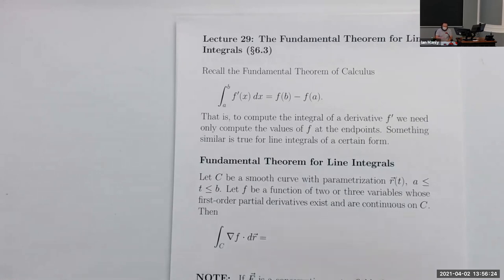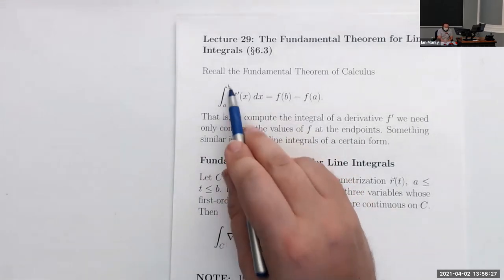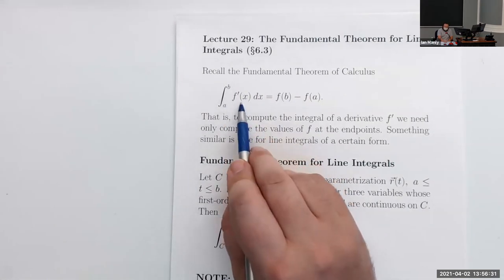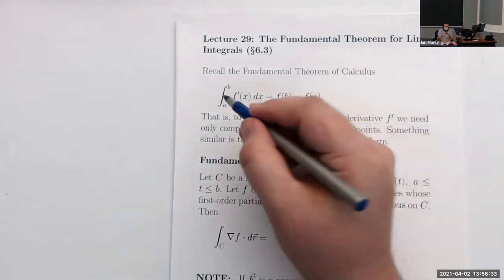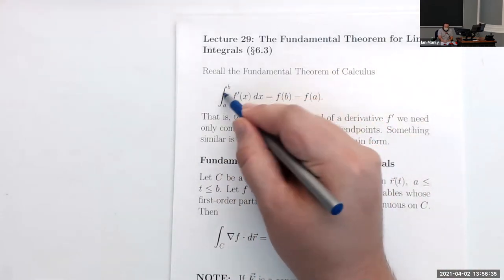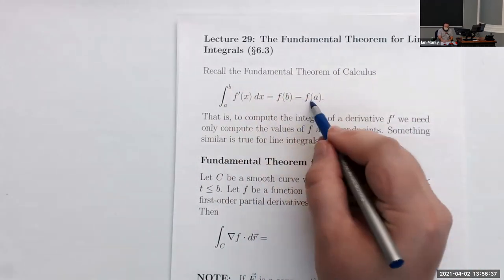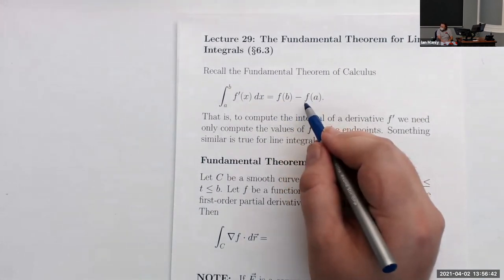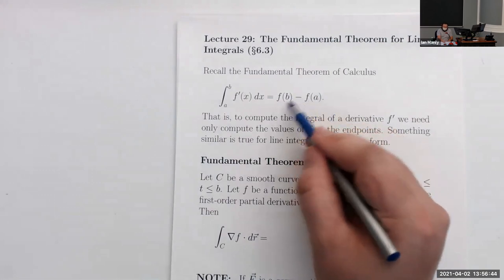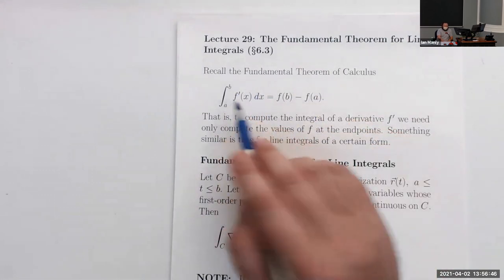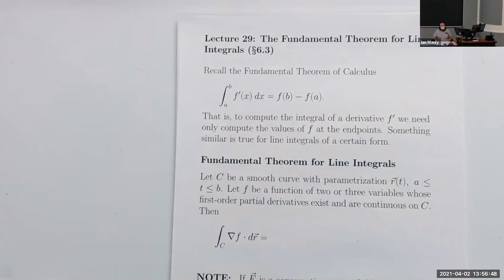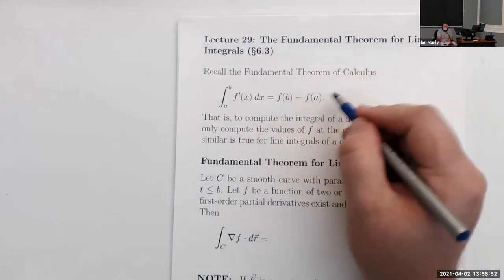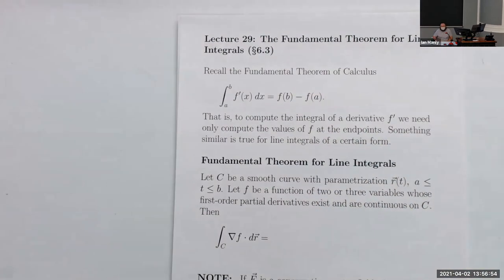Let's remember what the original fundamental theorem of calculus states: if you do the definite integral of a derivative of a function, they more or less cancel out. We have an integral and a derivative and both of them go away, and we're just left with f of b minus f of a. This is how we compute most single-variable integrals — we find the antiderivative and then plug in the numbers.